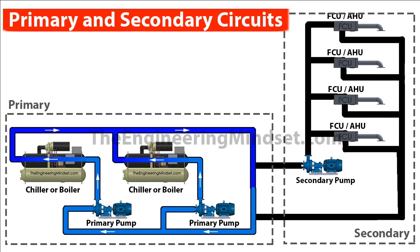Obviously you don't want that to happen. So in the primary circuit, the chilled or heated water flows from the primary pumps, around through the chiller or boiler, and continuously loops past the secondary circuits as well.